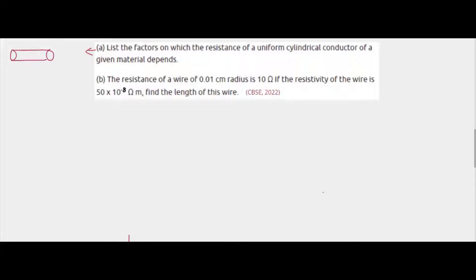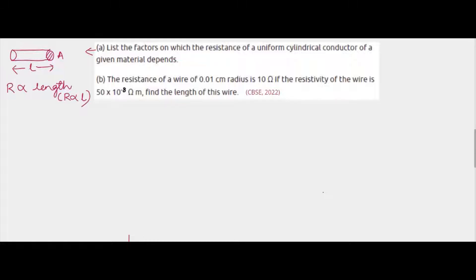First, we will solve part one. Let this be a cylindrical conductor, let this be the area of cross section, and this be the length of the conductor. We know that the resistance of a conductor varies directly as the length of the conductor — that means R will be directly proportional to L. If length increases, resistance will increase; if length decreases, resistance will decrease.